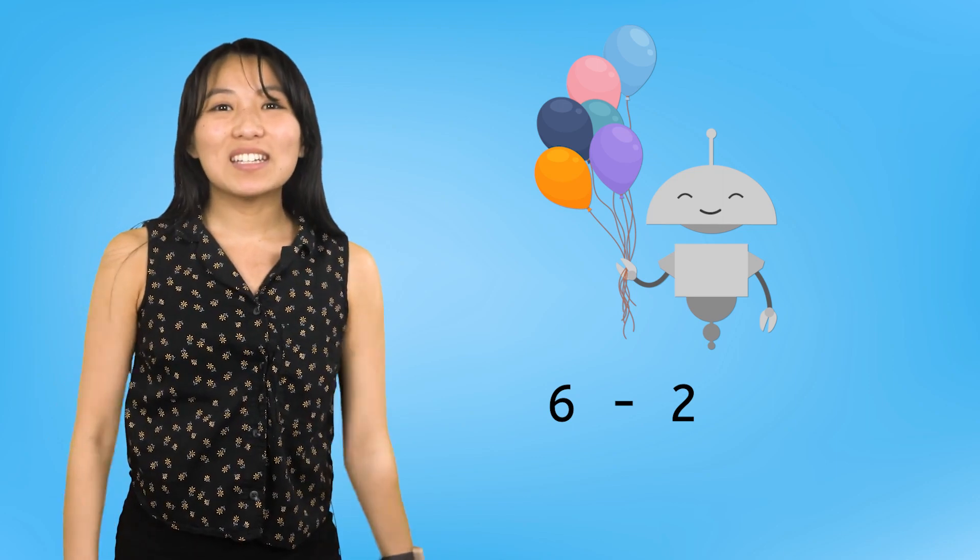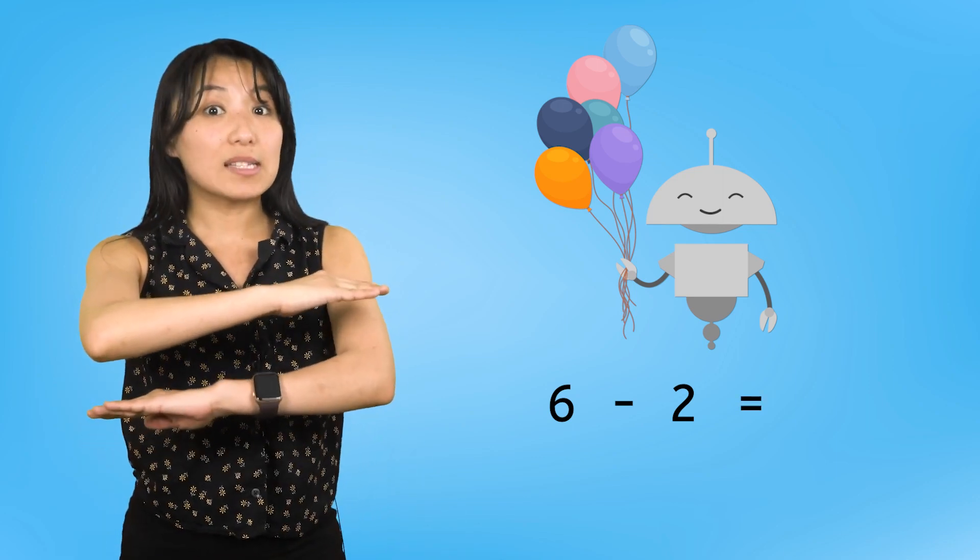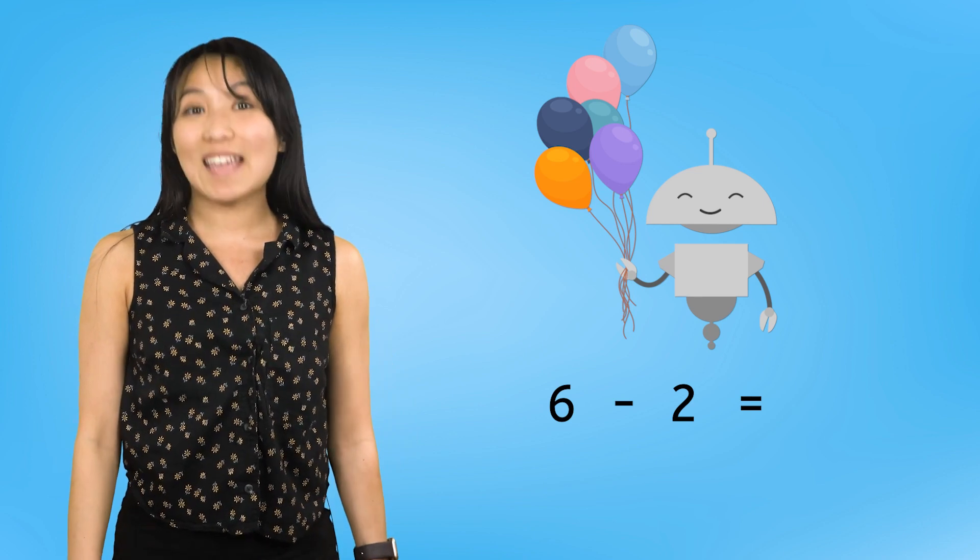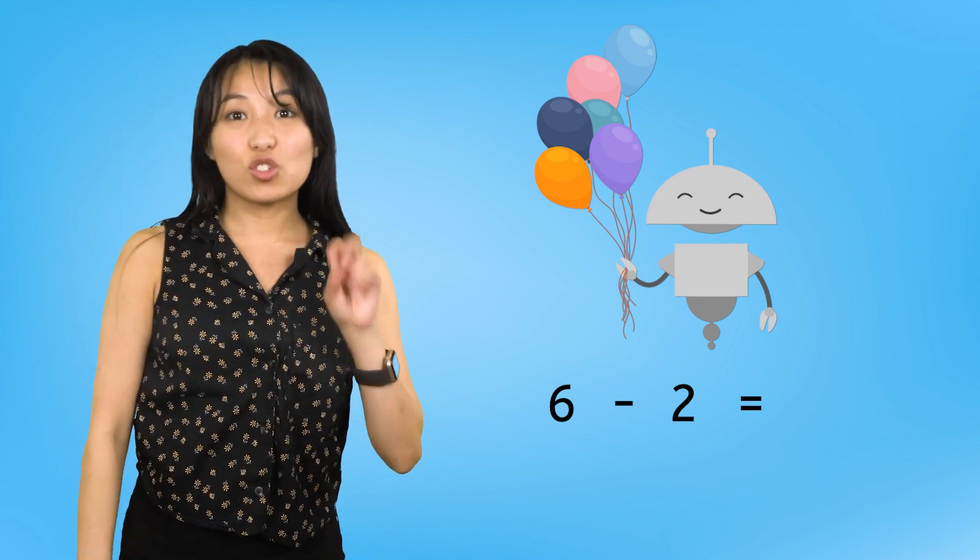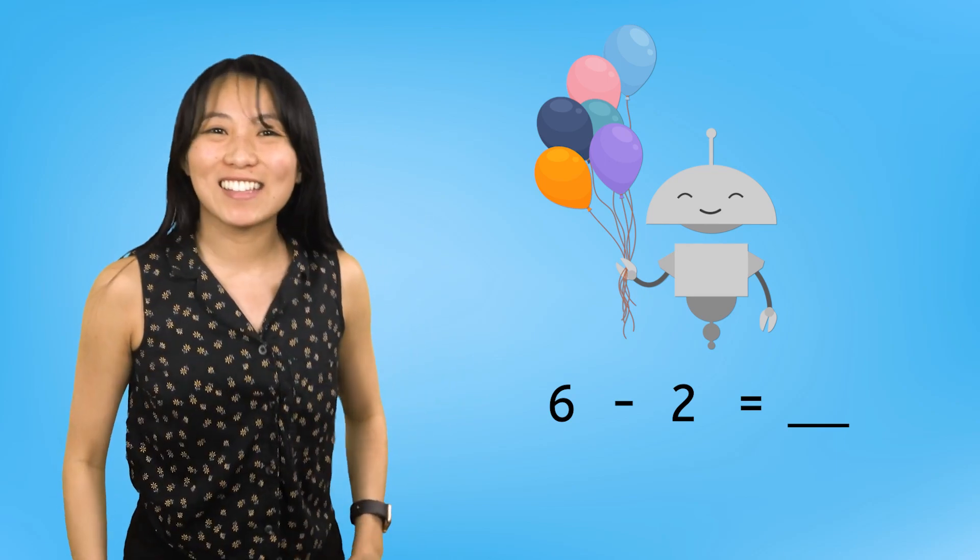Next, we need the equal sign because that is the symbol that comes before the answer. Six minus two equals... Let's find the answer!